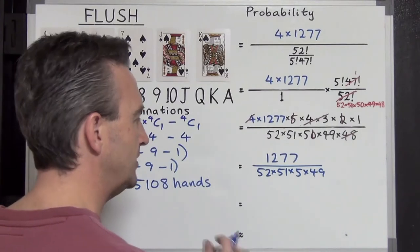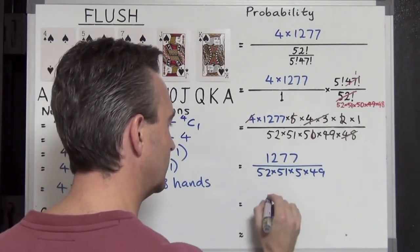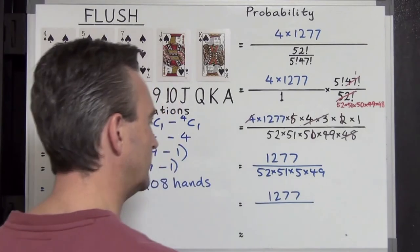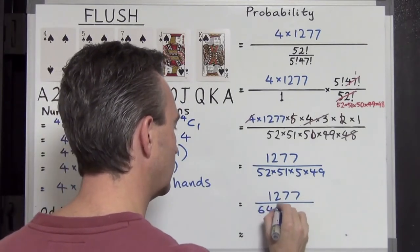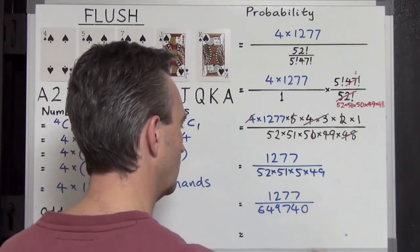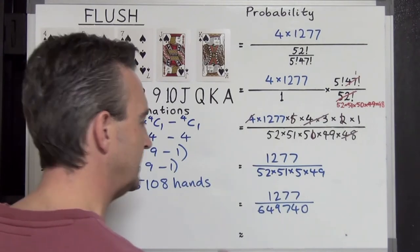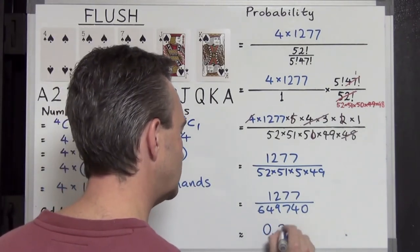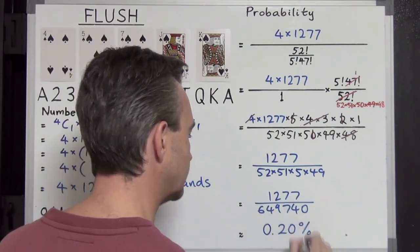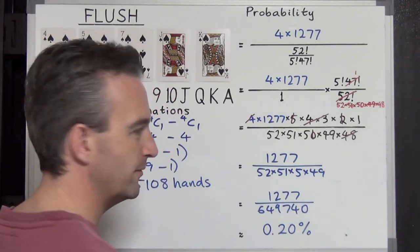Let's work this out. If you use a calculator for the denominator, you're going to get 1,277 left on the top and on the bottom 649,740. Doing that on the calculator as a percentage, that will be 0.20%, just at two decimal places. Very rare.